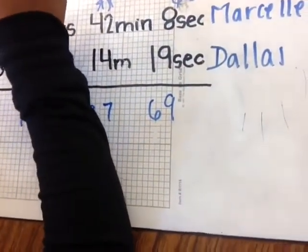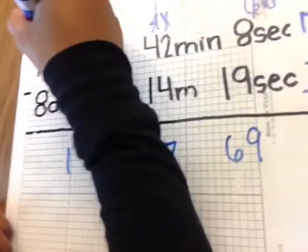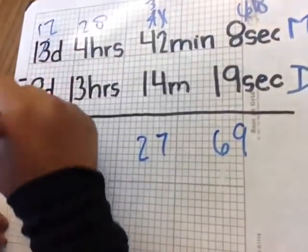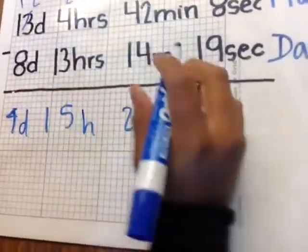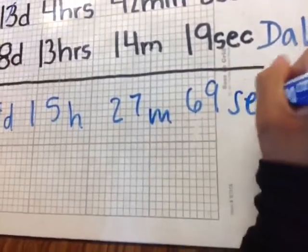And then now we're going to go on to the days. 12 minus 8 is 4. So the final answer would be 4 days, 15 hours, 27 minutes, and 69 seconds.